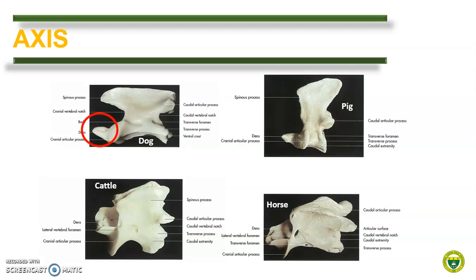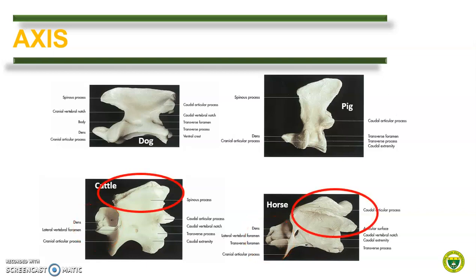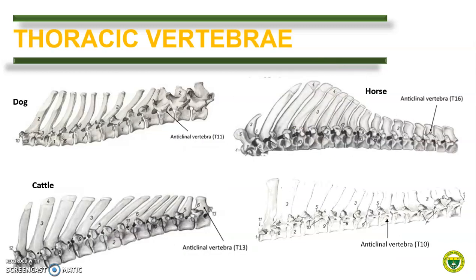In horse, cattle, and other ruminants, the dens is a spout shape, as shown here. To differentiate the two, we can compare the spinous processes. In cattle, it is like a rectangular bony plate, while in horse, it is bifid — there is a cleft splitting the spinous process into two. In the case of the pig, the dens is characteristically like in the dog, but the spinous process is narrow and high, projecting caudally, as shown here.